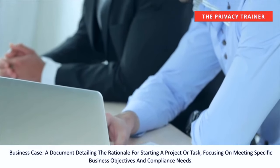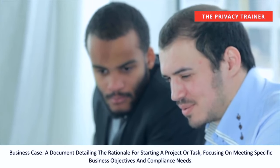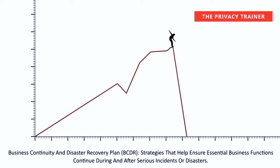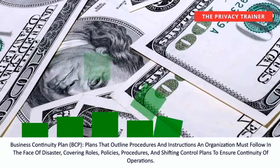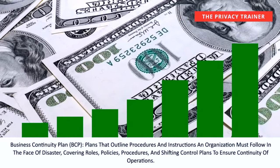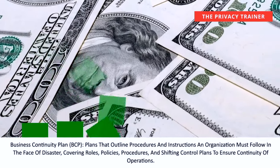Business Case. A document detailing the rationale for starting a project or task, focusing on meeting specific business objectives and compliance needs. Business Continuity and Disaster Recovery Plan, BCDR. Strategies that help ensure essential business functions continue during and after serious incidents or disasters. Business Continuity Plan, BCP. Plans that outline procedures and instructions an organization must follow in the face of disaster, covering roles, policies, procedures, and shifting control plans to ensure continuity of operations.